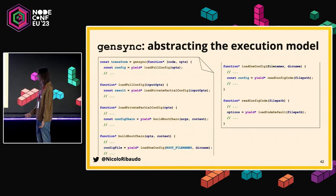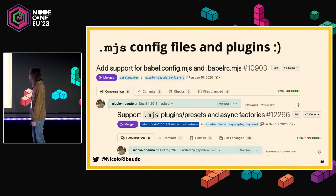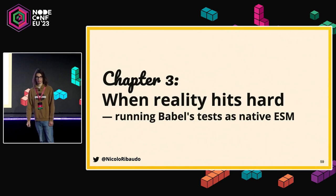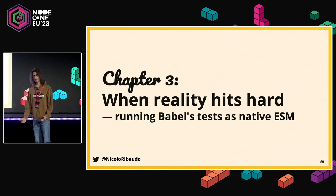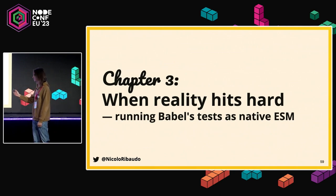We rewrote our code using gensync so we had a single implementation capable of running both ways, then exported both the old sync API and the new async API while preserving exact behavior. This led us, in 2020, to support .mjs config files, and one year later we added support for .mjs plugins and presets. At that point, Babel was able to interface with native ES modules externally, and we were no longer holding our users back. Then we started thinking about our own code.